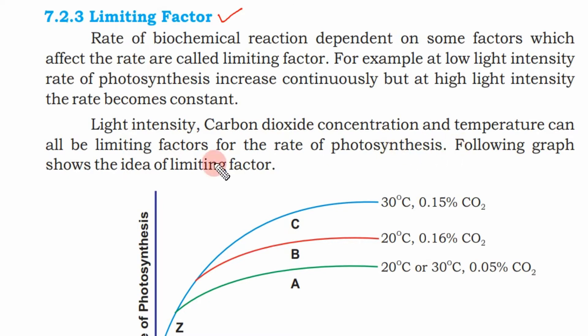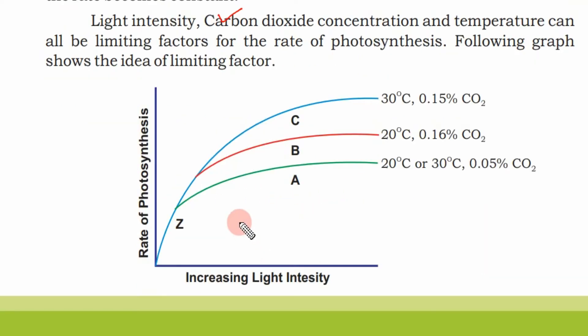Light intensity, carbon dioxide concentration, and temperature can all be limiting factors for the rate of photosynthesis. These are all factors which affect the rate of photosynthesis. The following graph shows the idea of limiting factors.